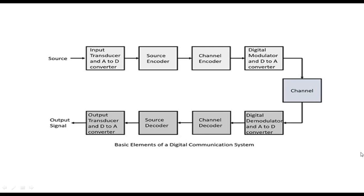The best example is the internet, where the computer works with digital zeros and ones — zeros and ones are being transmitted. In this case, the information signal is a digital signal itself. This is a block diagram of how a digital communication system and digital transmission works. You have a source with the digital information — a digital signal.